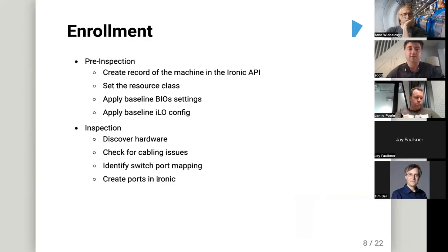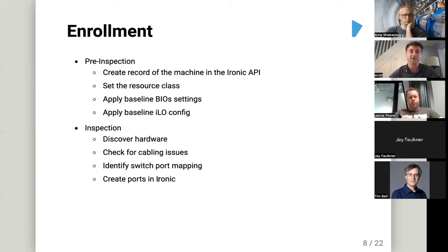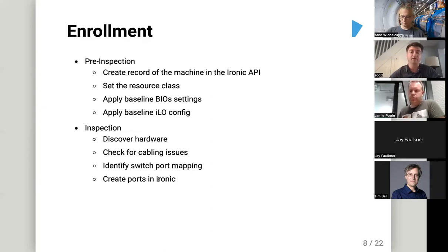To get machines into Ironic they go through an enrollment phase, all orchestrated using Ansible with custom playbooks in Kolla. First they go through pre-inspection: we create a record of the machine in the Ironic API, set the resource class, apply some baseline iDRAC settings. Then we switch the machine on and run Ironic inspection, which lets us discover what hardware is there, check for cabling issues, identify where it's plugged in on the switch, and create a port within Ironic to represent that node.